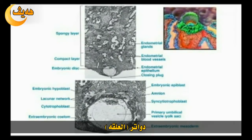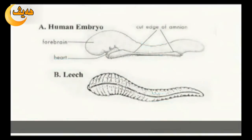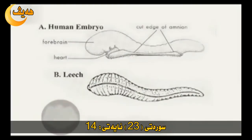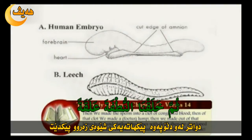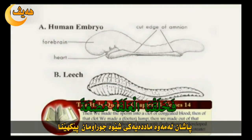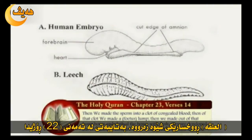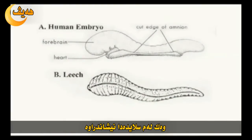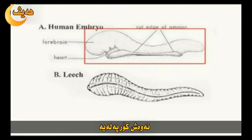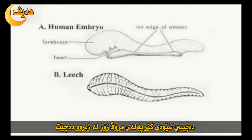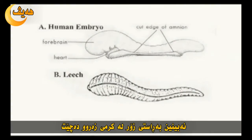Next is alica. Alica is Surah Al-Muminun, Ayah 14: 'Then we created the drop into a leech-like structure.' Alica refers to a leech-like appearance, especially at about 22 days, as shown in this slide. This is a leech, and this is the human embryo at about 23 days. I think you have to agree that the similarity between these structures is amazing, and that the human embryo is truly leech-like.